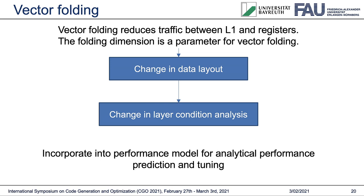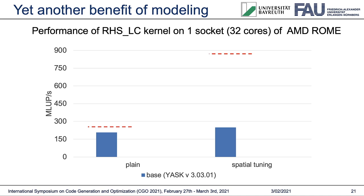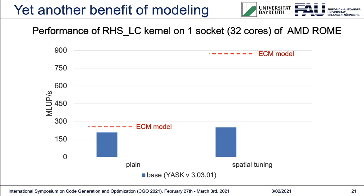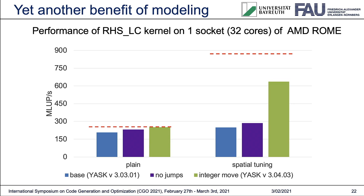Coming back to the question we asked in the beginning — is my code performing optimally on a given hardware? — we see that in this particular case, shown earlier, there is room for optimization since the model and the measurements deviate significantly. Therefore, we had a closer inspection of the assembly code and found that the code had unnecessary jumps and integer moves in the innermost loop costing performance, which was then fixed in a later version of YASK. In most cases, YASK did a very good job generating highly efficient code that reached within 10% of the model.